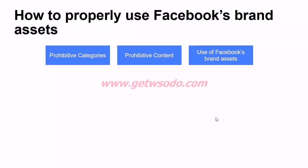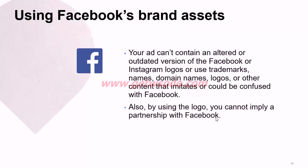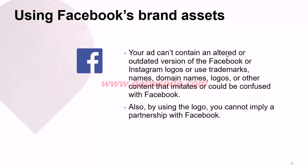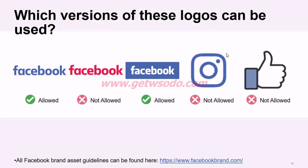The third pillar is usage of Facebook's brand assets. Your Facebook ad cannot use an altered or outdated version of Facebook or Instagram logos, trademarks, domain names, or logos. By using the logo, you also cannot imply a partnership with Facebook — you can say you integrate with Facebook, but claiming partnership is not allowed. Certain logo versions can be used and others cannot. You can check detailed guidelines at facebookbrand.com.